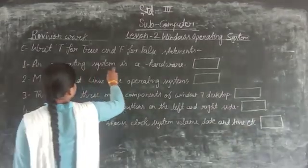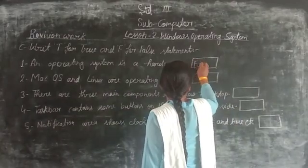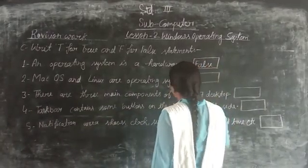First, an operating system is a hardware. An operating system is a hardware. False.